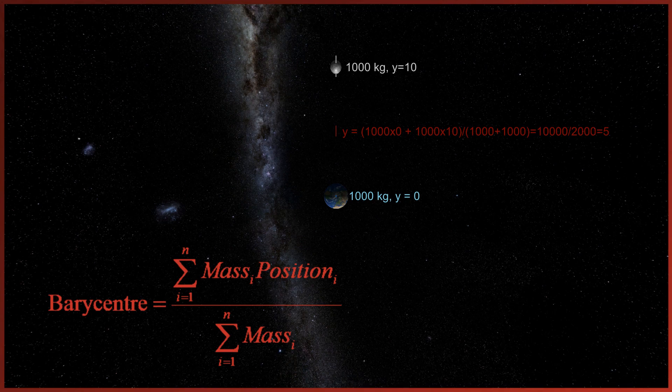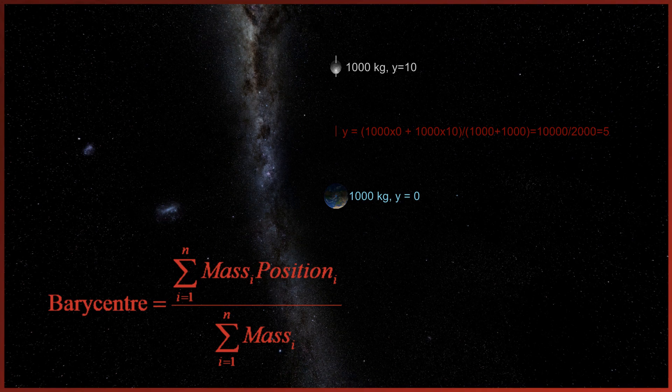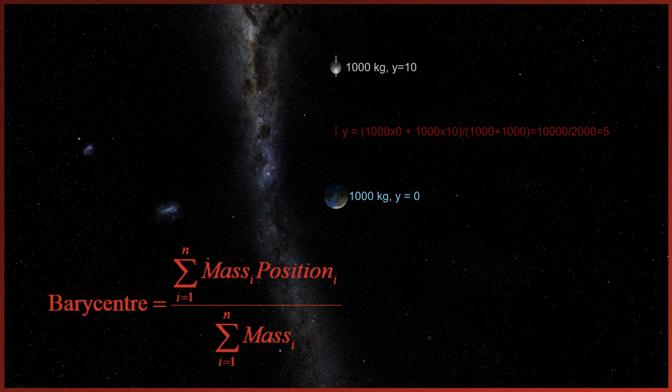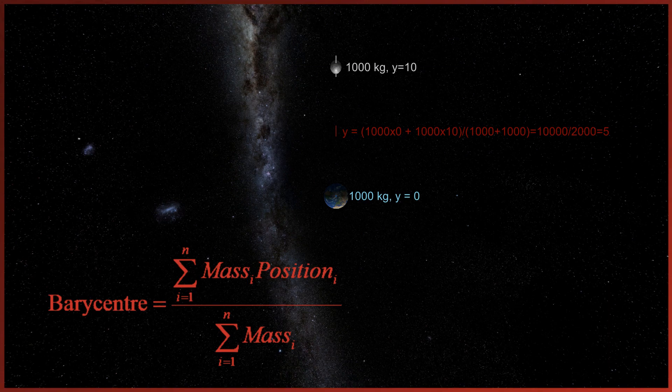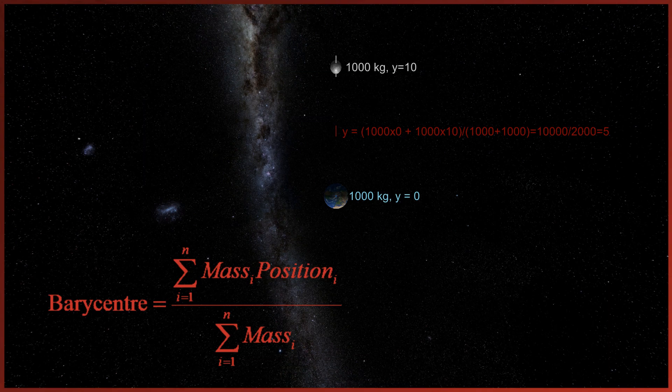The weighted position for the earth is a thousand times zero, so zero, while for the moon it's a thousand times ten, so ten thousand. Dividing the total by the sum of the masses, two thousand, we calculate that the barycenter lies on position five. This is precisely halfway between the zero of the earth and the ten of the moon because the two have the same mass in this example.